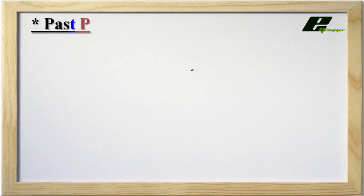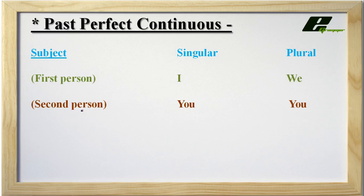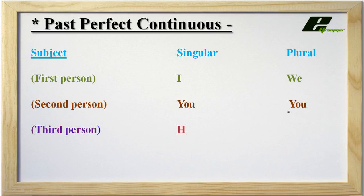Let us see subjects first. Subjects are of three types which are divided into two parts: singular and plural. First Person — the person who speaks is known as First Person. In singular it is 'I' and plural it is 'we'. Second Person — the person to whom we are speaking is known as Second Person. Singular is 'you' and plural is also 'you', where singular 'you' stands for one person and plural 'you' stands for more than one person. Third Person — the person whom we are speaking about. In singular it is 'he', 'she', 'it', and any name such as Sam. In plural it is 'they'.